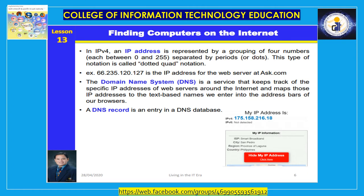For example, 66.235.120.127 is the IP address for the web server at ask.com. Anytime you visit the ask.com website, your computer exchanges packets of information with the ask.com web server, using that IP address to properly address the packets it sends to the server. Once the addressed packets are sent onto the internet, routers guide the packets to the ask.com web server. Because return address information is included in the packets, the ask.com web server knows how to properly address the packets it returns to your computer.